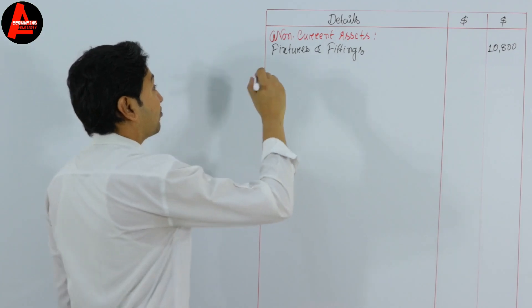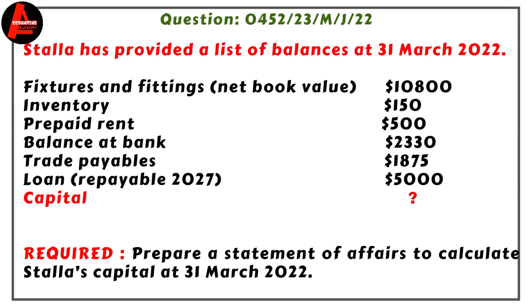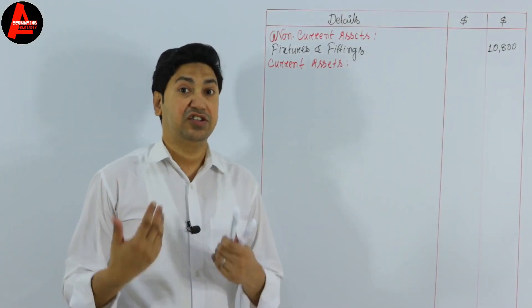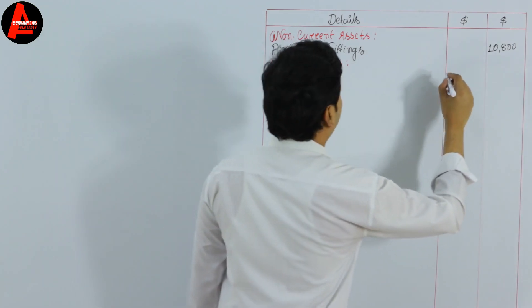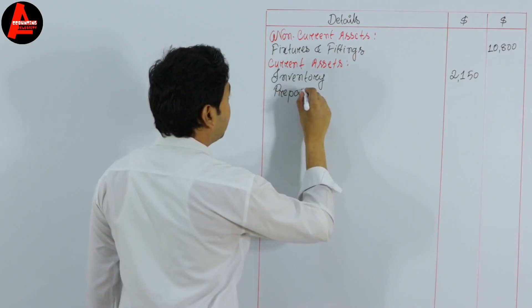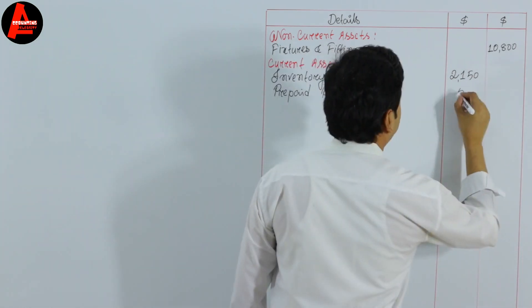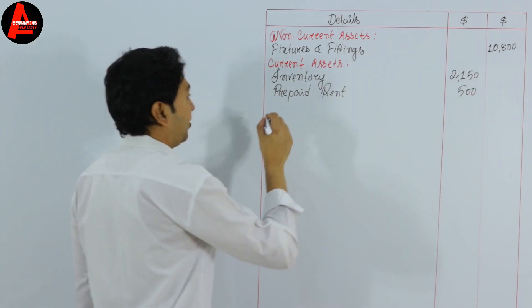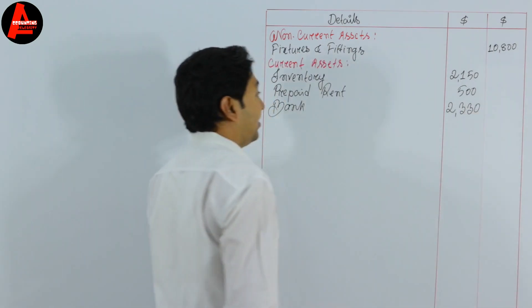Next section is current assets. From the question we have three current assets: inventory at $2,150, prepaid rent at $500 (also acceptable to write as other receivable), and bank balance at $2,330. We write these one by one.